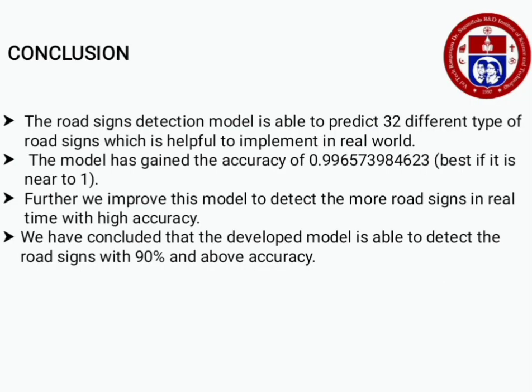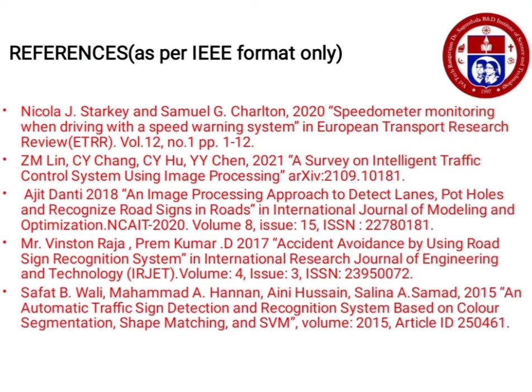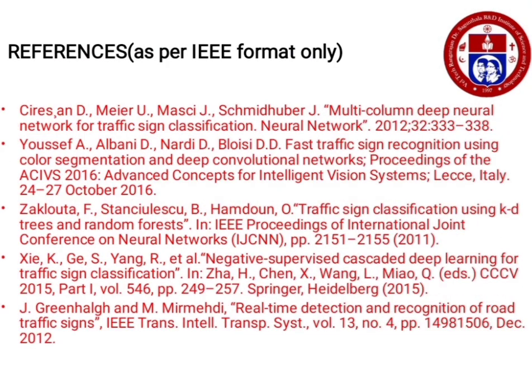Coming to the conclusion and future enhancements: the proposed traffic sign detection and recognition model is able to predict 32 different types of road signs, which is helpful for real-world implementation. The model can integrate with other equipment to be used effectively and has gained an accuracy of 0.9965. We can improve this model to make more predictions on new road signs with reduced error by training it with larger amounts of data, and it can be further improved to be suitable for all types of vehicles. These are the references we used to enhance this model.